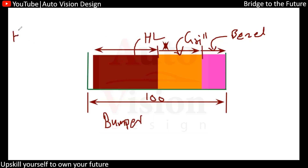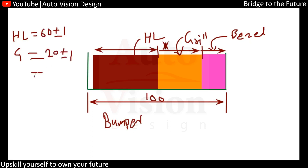Suppose the headlamp length will be something like 20 plus or minus 1 mm. Then we have the grill part, and that grill part has something like 60 mm — so we can treat that as 20 plus or minus 1 mm. And again this particular basal part is also going to have somewhere like 20 plus or minus 1 mm.